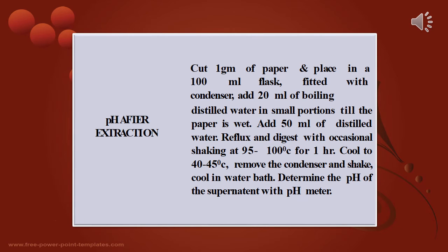For the pH after extraction test, cut 1 gram of paper and place it in a 100 ml flask fitted with a condenser. Add 20 ml of boiling distilled water in small portions until the paper is wet, then add 50 ml of distilled water. Reflux and digest with occasional shaking at 95 to 100 degrees Celsius for 1 hour. Cool to 40 to 45 degrees Celsius, remove the condenser and shake, cool in a water bath, then determine the pH of the supernatant with a pH meter.